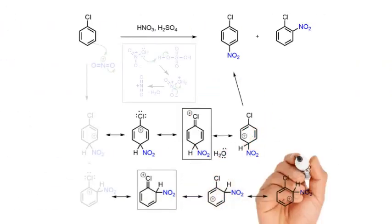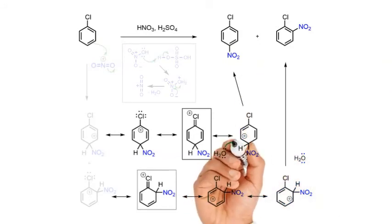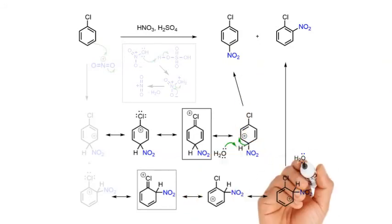In the final, fast step, water from the solvent deprotonates the sigma complex intermediates and the stable 6-pi aromatic system is regenerated in both isomers.